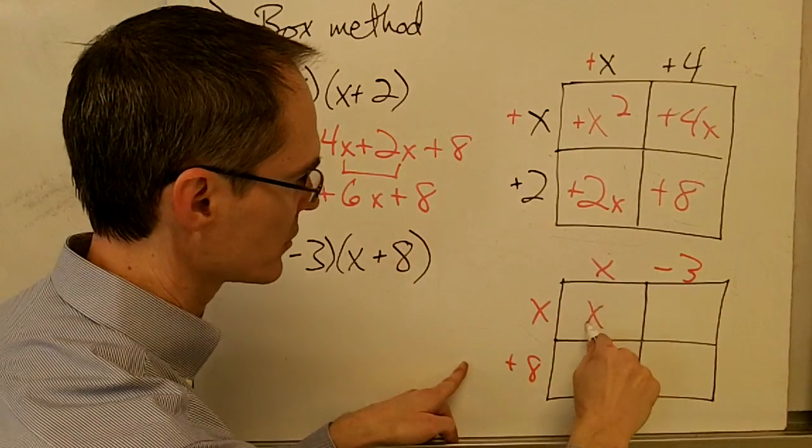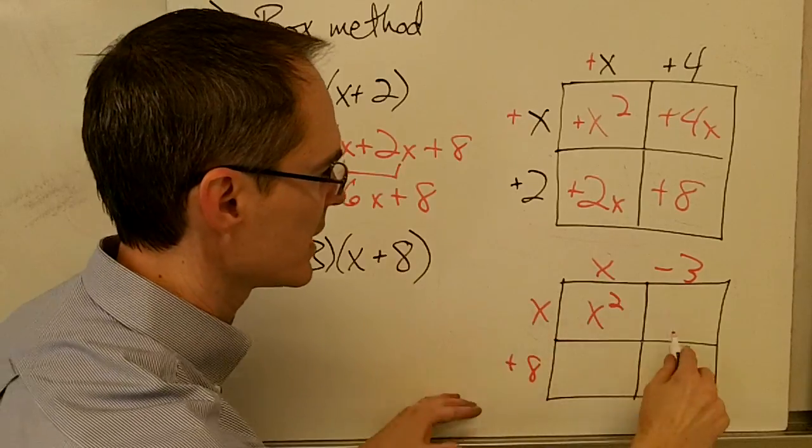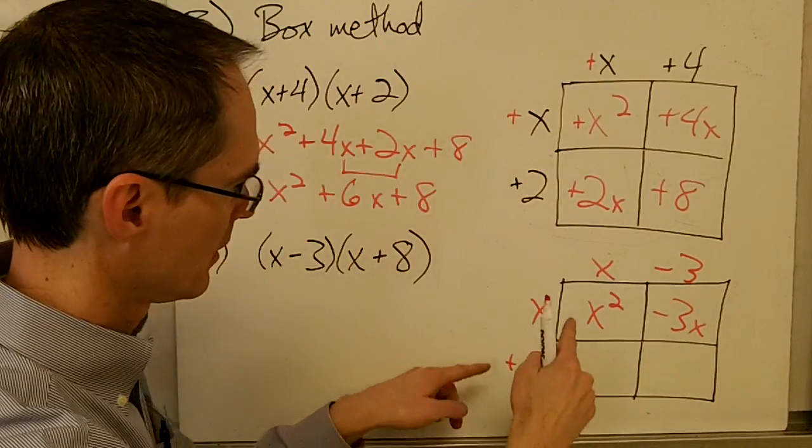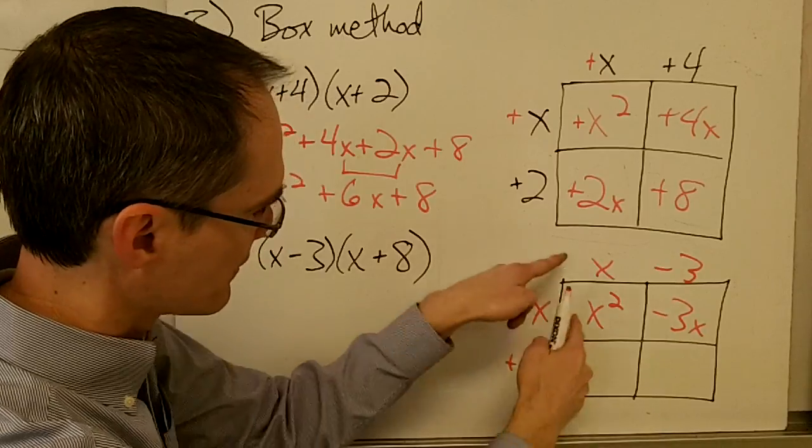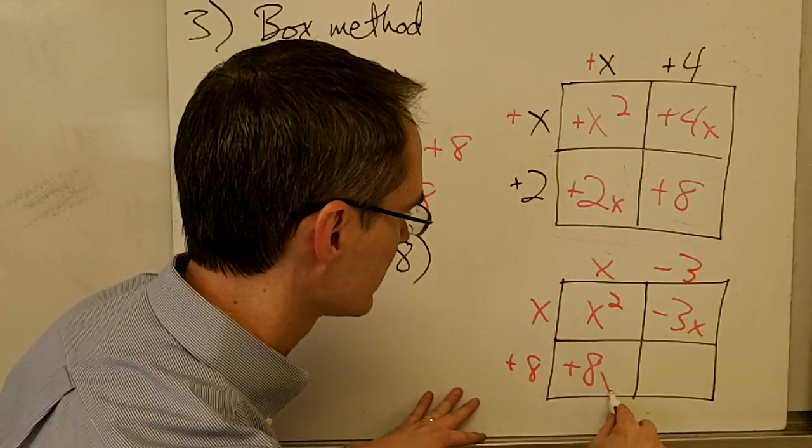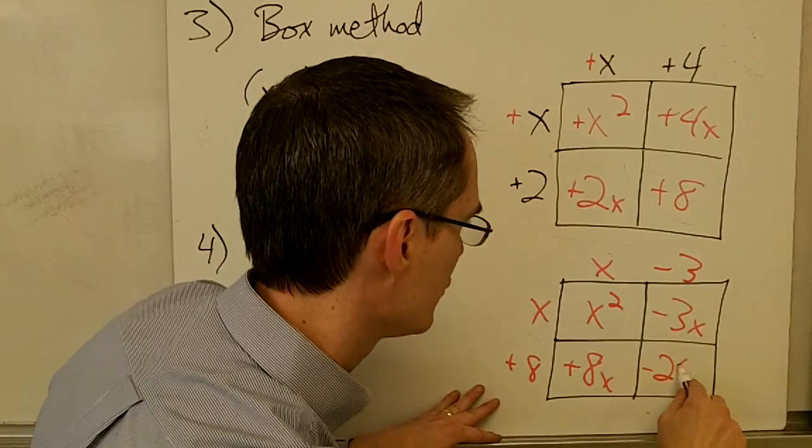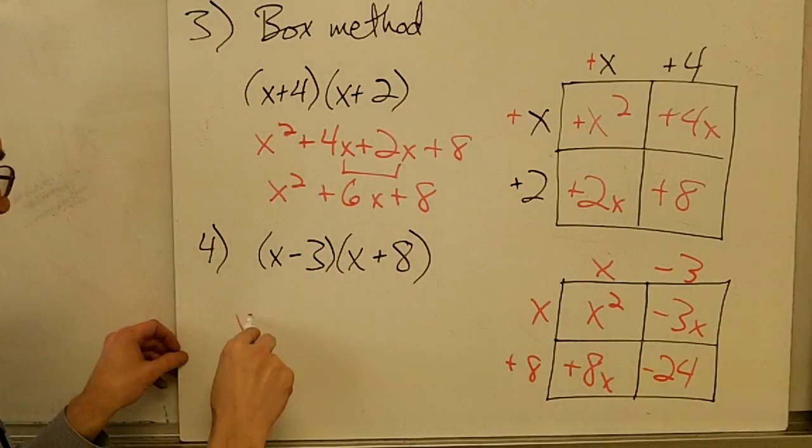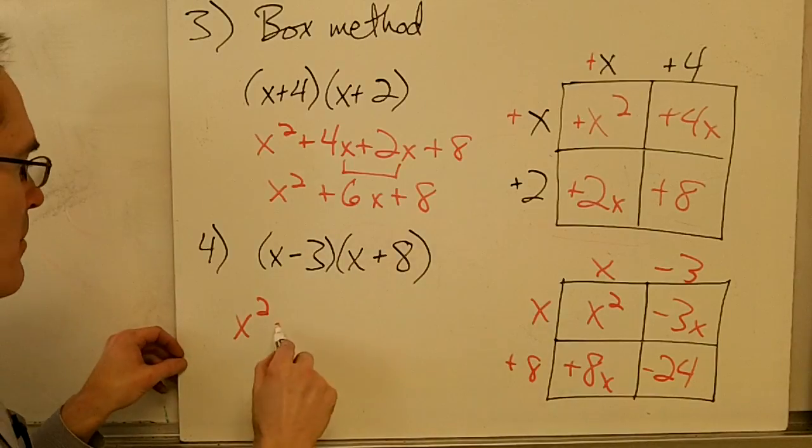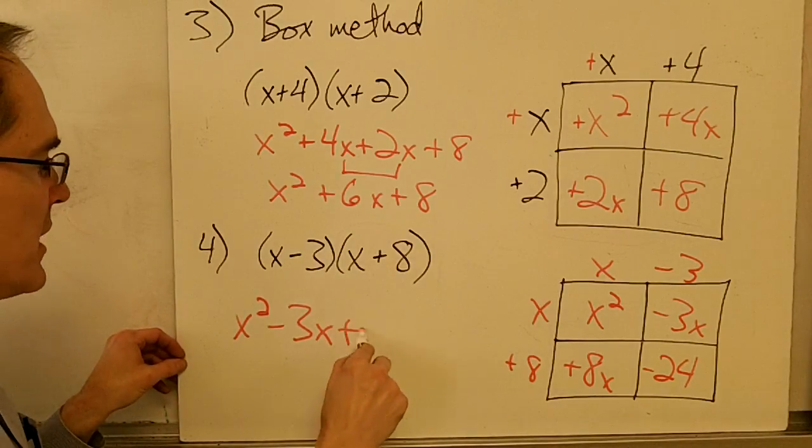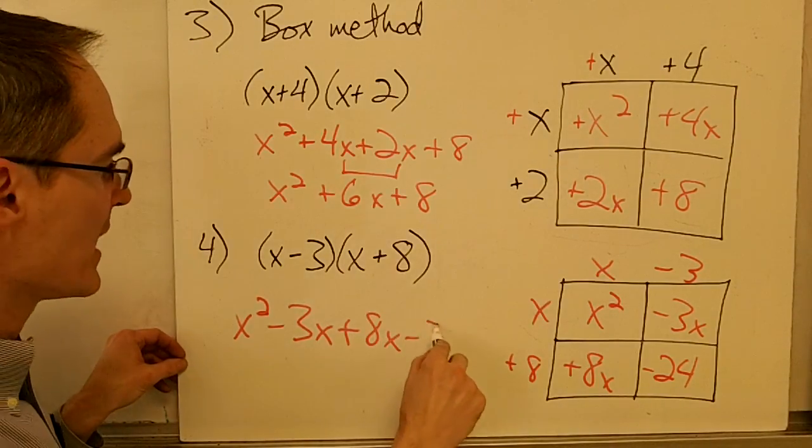x times x is x squared. x times negative 3 is negative 3x. Positive 8 times x is positive 8x. Positive 8 times negative 3 is negative 24.